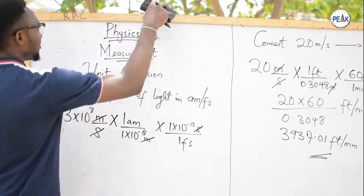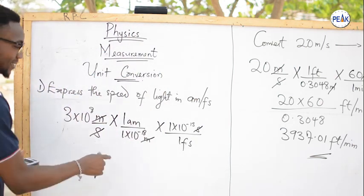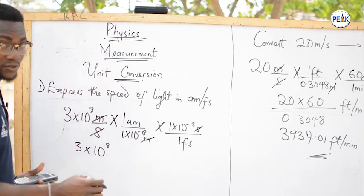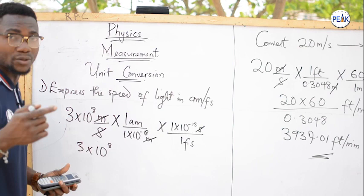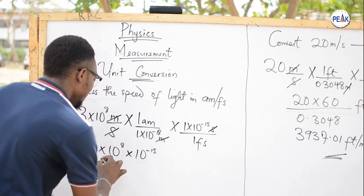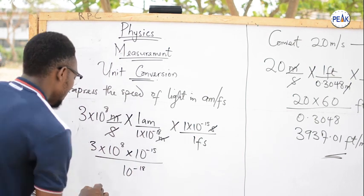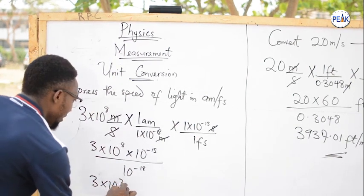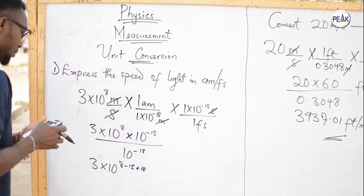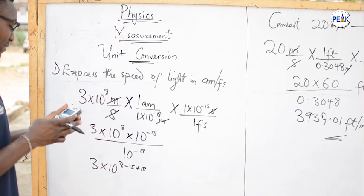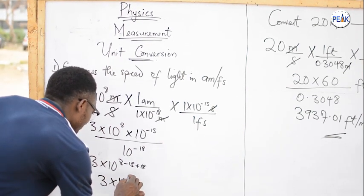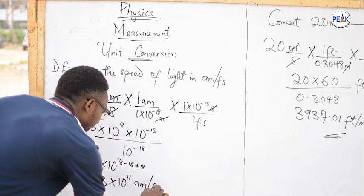Now we can solve for our answer. We have 3 times 10 to the power 8, multiplied by 10 to the power minus 15 divided by 10 to the power minus 18. Using standard form and laws of indices: 3 times 10 to the power of (8 minus 15 plus 18). That is 8 minus 15 plus 18 equals 11. So the answer is 3 times 10 to the power 11 attometers per femtosecond. Very easy.